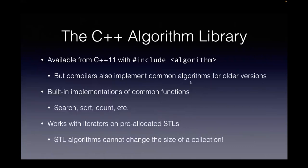The C++ algorithm library is available from C++11 — just add '#include <algorithm>' in your source file. There is a built-in implementation of several common functions: search, sort, count, find first, rotate, all kinds of insertions — all taken care of by algorithms. You don't have to write C++ code to do all those common functionalities; you just focus on coding your algorithm itself. The important thing is that the algorithm library works with iterators on pre-allocated STL containers. You have to pre-allocate and pass a begin and end iterator into the function.